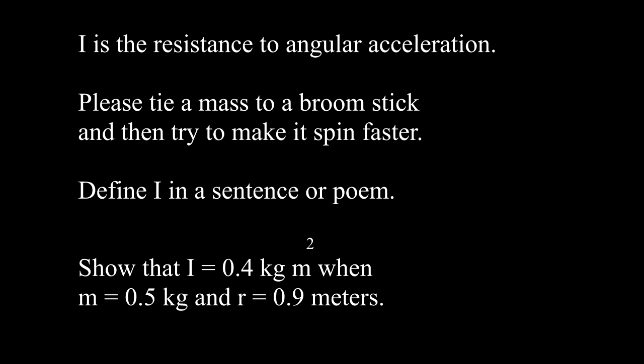Move the mass to the 90 centimeter mark, and then try to make it spin faster. Your muscles will tell you that the mass does not want to spin faster. The resistance is much greater. Please tie a mass to a broomstick and then try to make it spin faster. Define I in a sentence or poem. Show that I equals 0.4 kilogram meter squared when m is a half kilogram and r is 0.9 meters.